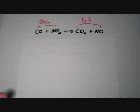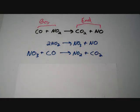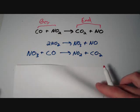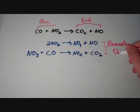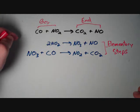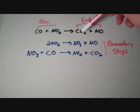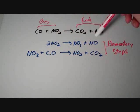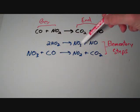A reaction mechanism is the series of individual steps by which the overall reaction occurs. This particular mechanism consists of two individual steps, and we call these steps elementary steps. Elementary steps cannot be broken down into simpler steps — they basically occur as they are written. The first elementary step has two NO₂ molecules colliding to produce an NO₃ molecule and an NO molecule. The second step has the NO₃ reacting with a CO molecule to produce an NO₂ molecule and a CO₂ molecule.